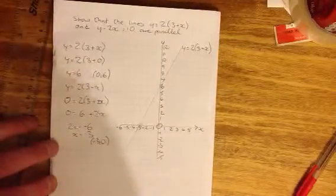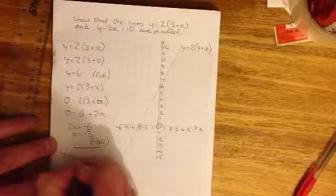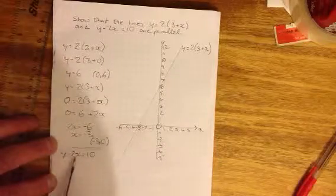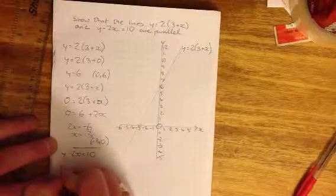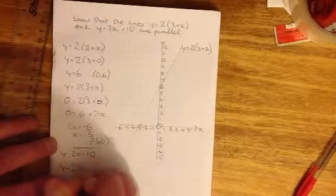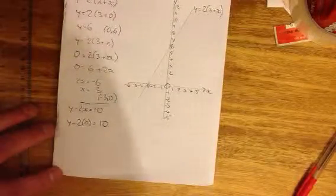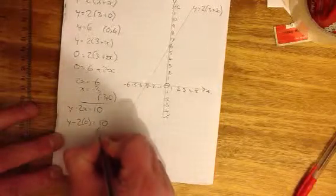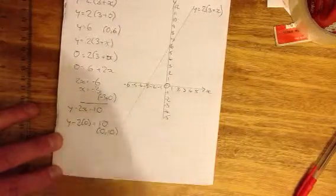And now I'm going to do the same thing for the second line. Y minus 2x equals 10. Again, I'm going to substitute in the value of 0 for x to find our value on the y-axis. So y take away 2 times nothing equals 10. Well, 2 times nothing is nothing. So y equals 10. That gives us our point. We've already agreed that the x-coordinate is 0 because we're on the y-axis. We've got the point 0, 10.